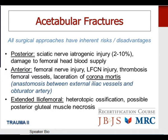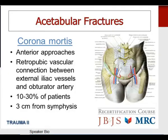The corona mortis is at risk with all anterior approaches — both the ilio-inguinal and the Stoppa approach. It is a retropubic vascular connection between the external iliac vessels and the obturator artery, present in approximately 10 to 30 percent of all patients as part of their normal anatomy, and typically found three centimeters lateral to the pubic symphysis.